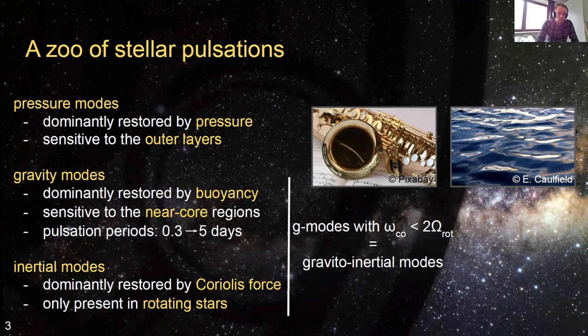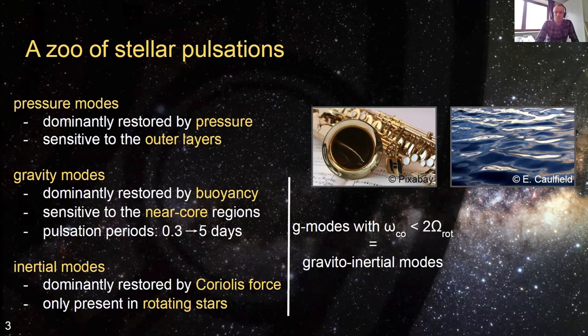We also have inertial mode pulsations. These oscillations are dominantly restored by the Coriolis force, and as a result, these only exist in rotating stars. And then there are pulsations that are essentially a mix of these main types. For example, if we have gravity mode pulsations for which the pulsation frequency in the co-rotating frame is smaller than two times the rotation frequency, then those oscillations will be restored by both buoyancy and the Coriolis force — and we then talk about gravito-inertial modes.